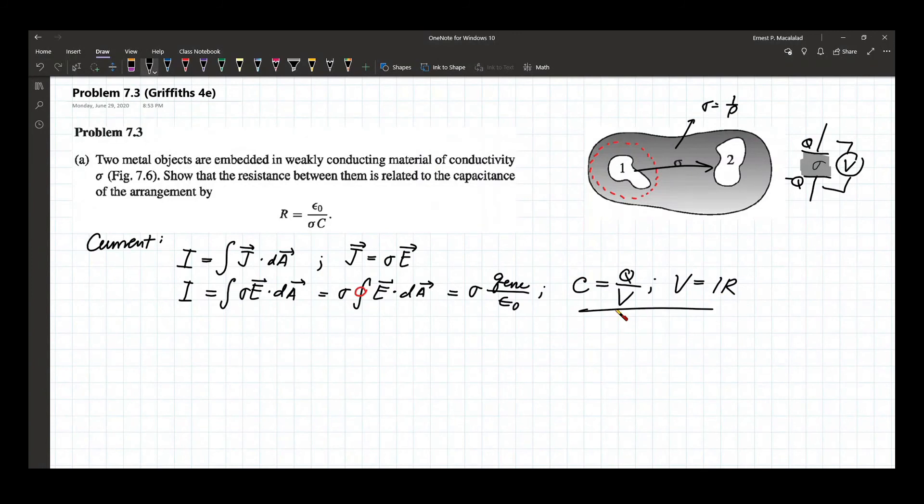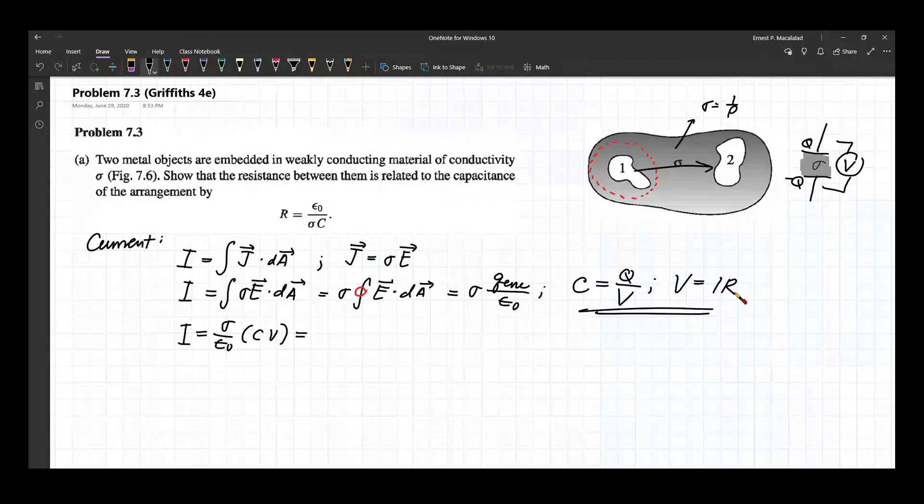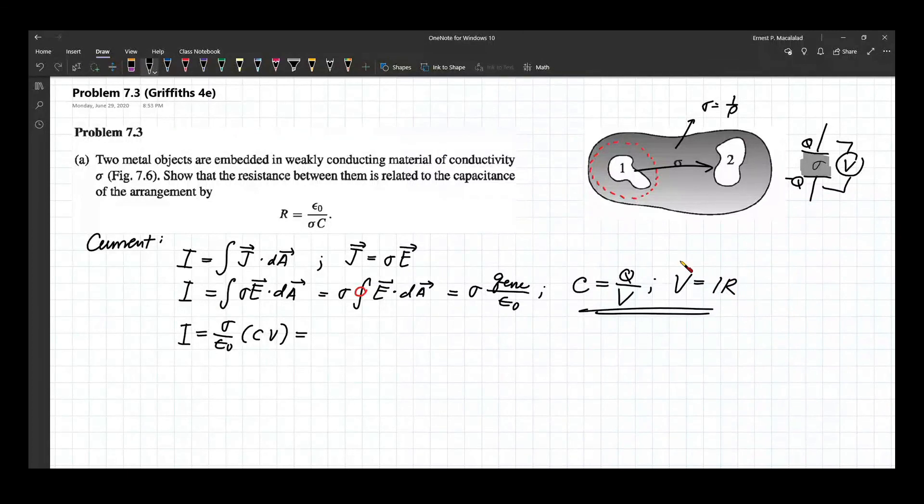So using this relationship, we can write now the current. Current is now written as sigma over epsilon naught, and Q enclosed which is C times V, which is equal to IR. So from here, we can substitute this in this equation.